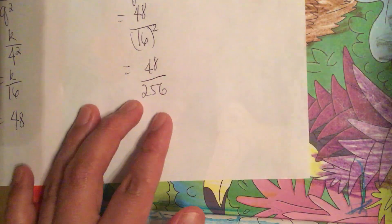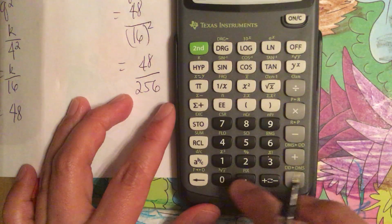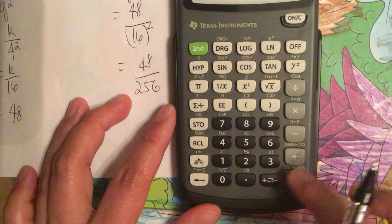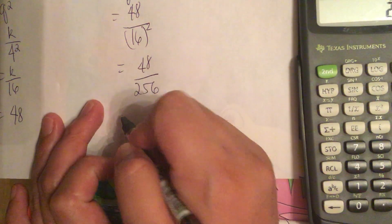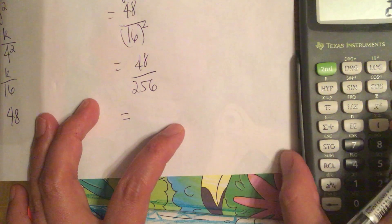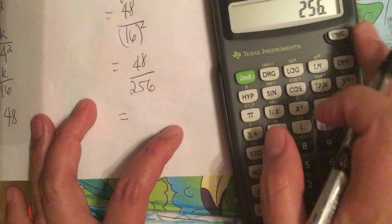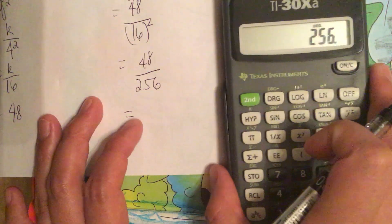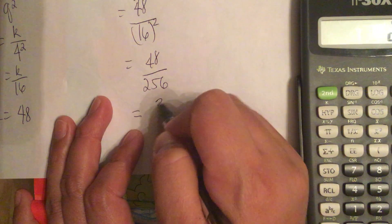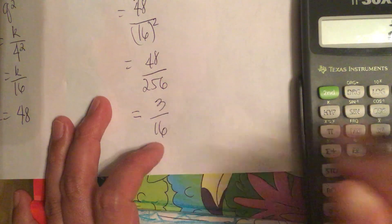So let's double check. This is equal to 256, so we reduce this to 3 over 16.